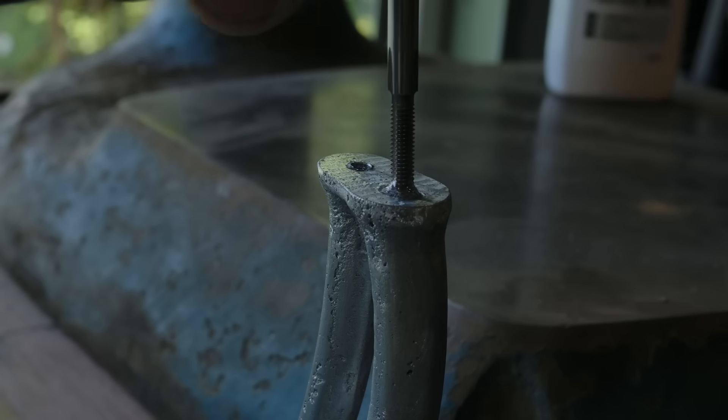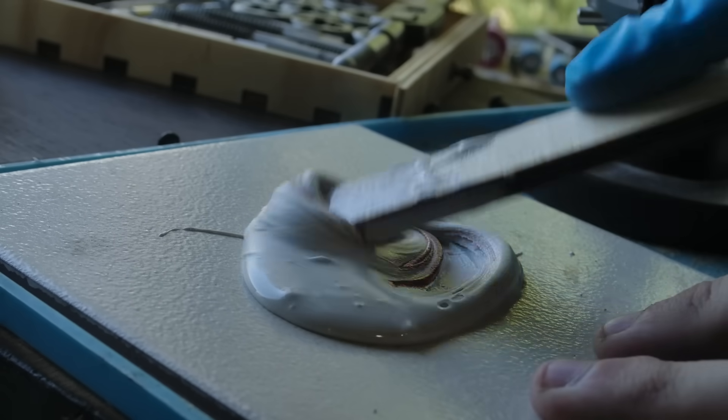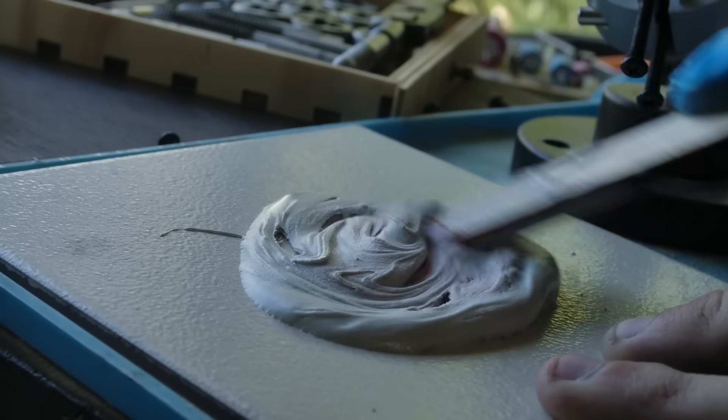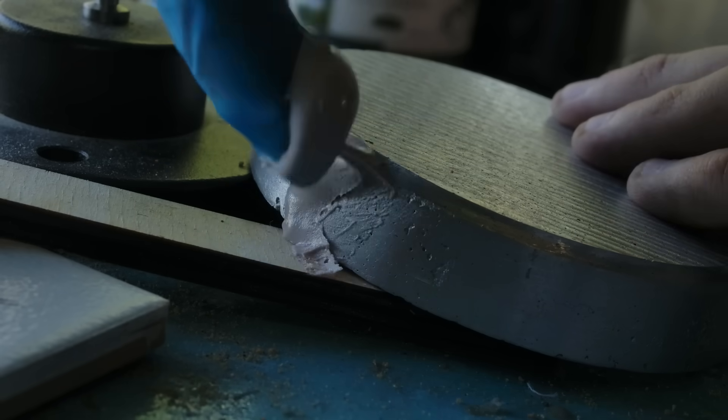I was now ready to sand and paint the parts. To begin this, I cover the base and arm in filler, before sanding it back to a smooth surface.